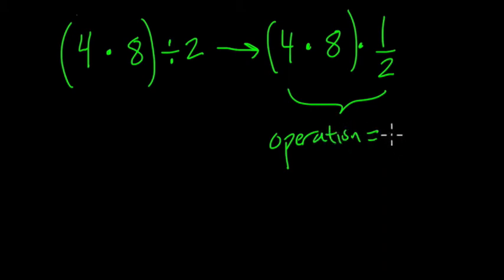Now, what's nice about this is now the only operation I have left is multiplication. And when the operation is multiplication, you can do lots of things. We can use the commutative property to multiply in any order. And we can use the associative property to group in any order. So I could solve this in many ways now.